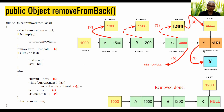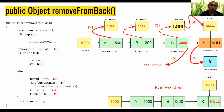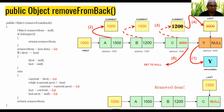We want to find and remove the last node in the list. First, create an object called removeItem of type Object, because we want to return the removed data rather than completely destroying it. Then check using isEmpty to make sure the list is not empty.